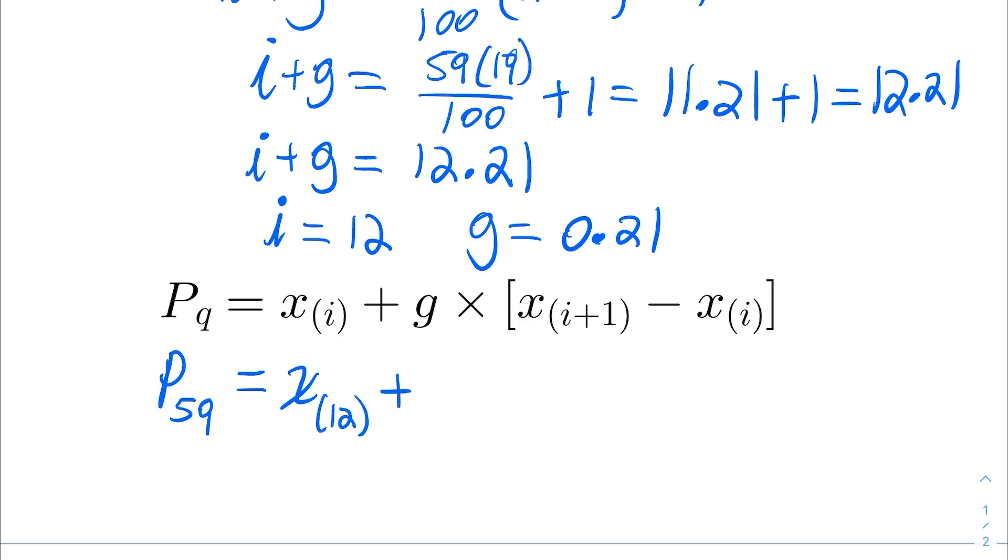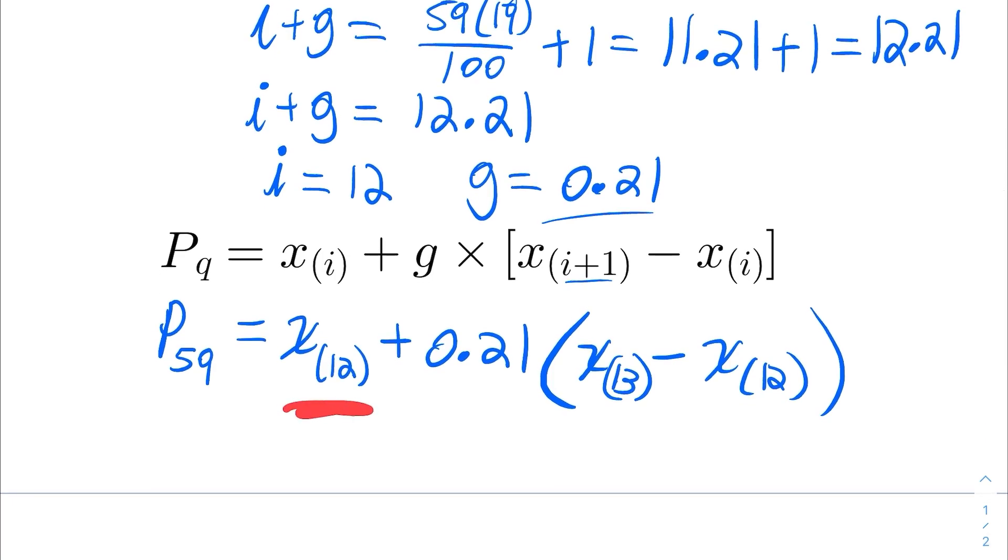And then, that's plus g, which is 0.21, the fractional part, multiplied by X(i+1). Well, i is 12, so that's 12 plus 1, 13. So, I'm looking at the 13th order statistic, minus Xi, which is, once again, the 12th order statistic. So, I'm looking for this here. I just need to know what the 12th and 13th order statistics are, and I can find P59.